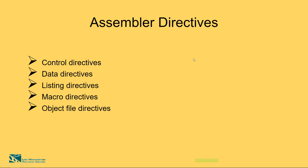Now let's start with assembler directives. These five different assembly directives look very similar to instructions in an assembly language program. Most assembler directives tell the assembler to do something other than just creating machine code for an instruction. The main five directives are: control directives, data directives, listing directives, macro directives, and object file directives. All these assembler directives provide the programmer with a means to instruct the assembler on how to process subsequent assembly language instructions.